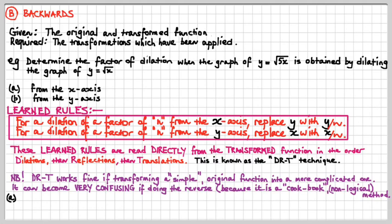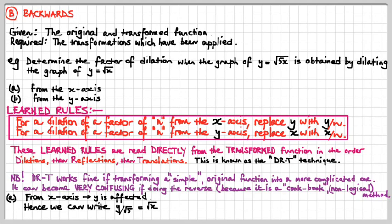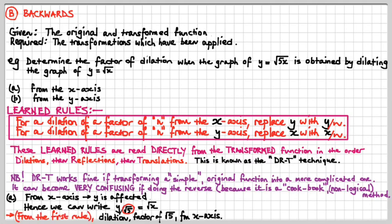For part A — from the x-axis — the y is affected. We rewrite the transformed equation as y/√5 = √x, so we've replaced y with y/√5. From the first rule, that's a dilation of a factor of √5 from the x-axis. We're just reading it off directly.